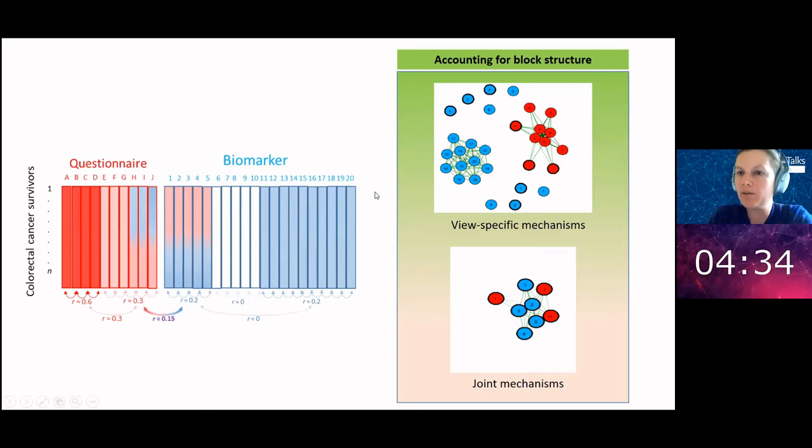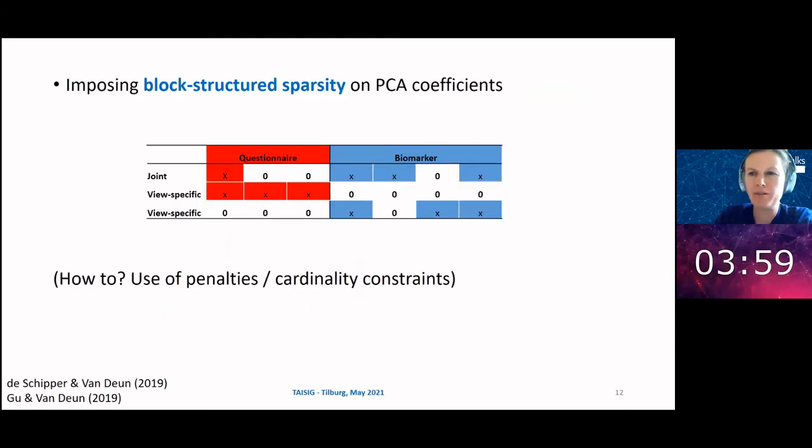Applying this type of method to the synthetic data I just showed you indeed recovers the type of structure that is in your data. In the top panel I'm showing the view-specific mechanisms, and there you'll find that for the biomarker data you have this big group with all correlated variables, and for the psychological variables you have correlation between all psychological variables. The method also picks up this joint mechanism that is linking the two types of data blocks, displayed here in the bottom.